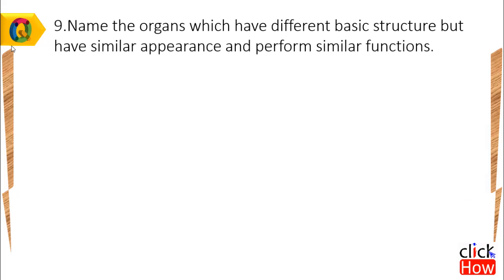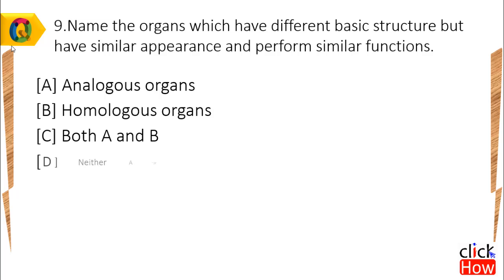Question 9: Name the organs which have different basic structure but have similar appearance and perform similar functions. Option A) Analogous organs, B) Homologous organs, C) Both A & B, D) Neither A nor B.